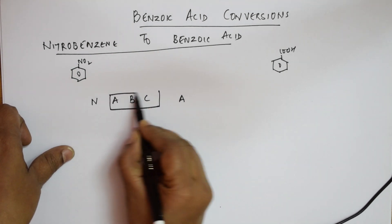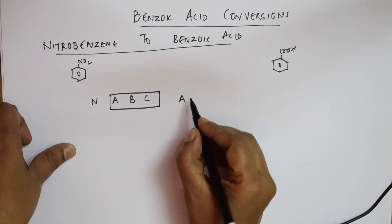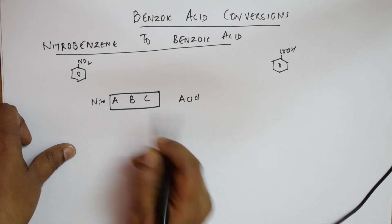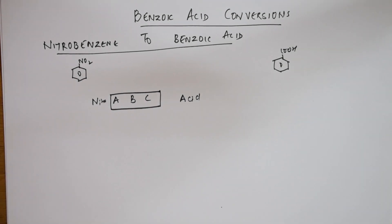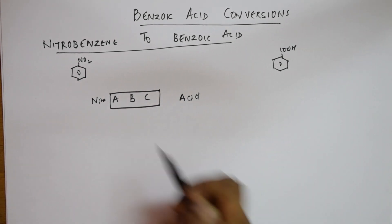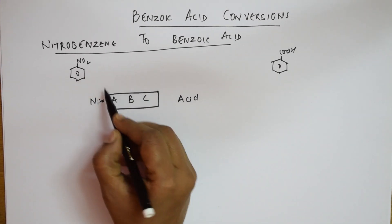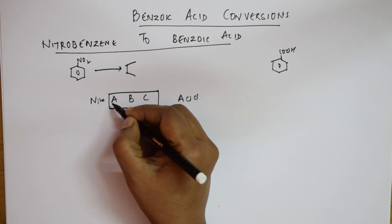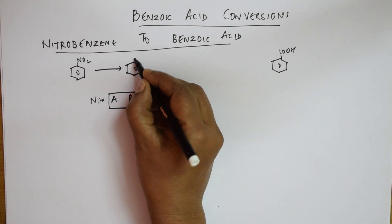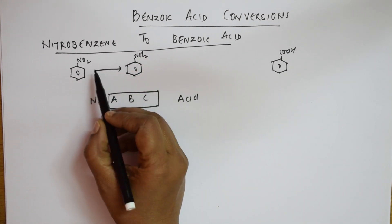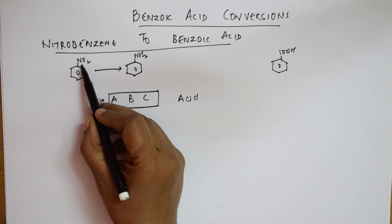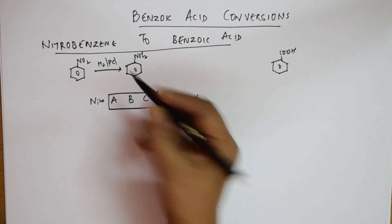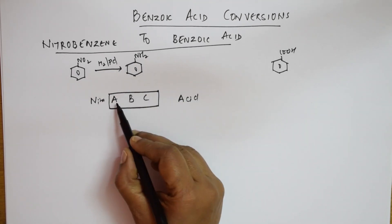Remember: nitrobenzene, aniline, nitrobenzene and acid. This is acid, this is nitro group. In between you are going to follow A, B, C steps. Step A: as soon as you get nitrobenzene, try to convert it into aniline. A stands for aniline. How? This NO2 group — by using reducing agents like hydrogen in the presence of palladium, or Sn/HCl, I can convert it. A is done.